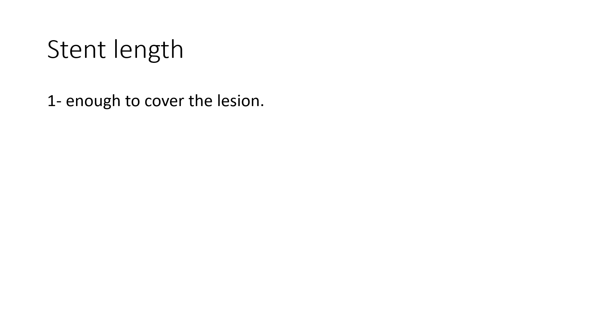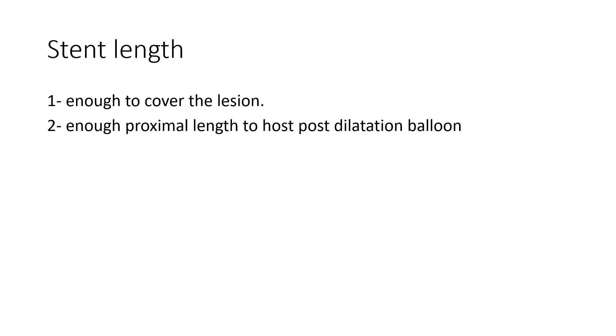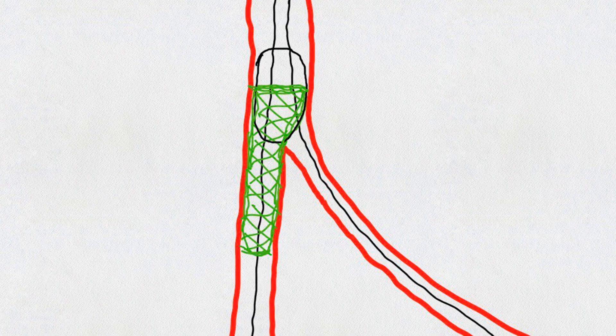The second important point about stent size is the length. There are two key considerations. First, the stent length should be long enough to cover the lesion — this is obvious. Second, there should be enough length proximal to the carina for post-dilatation or POT. If the stent is shorter than the balloon used for POT, the balloon will be inflated at the raw area and can cause injury to the vessel. In summary, stent diameter should be selected according to the distal vessel, and stent length should be enough to cover the lesion and allow for POT.